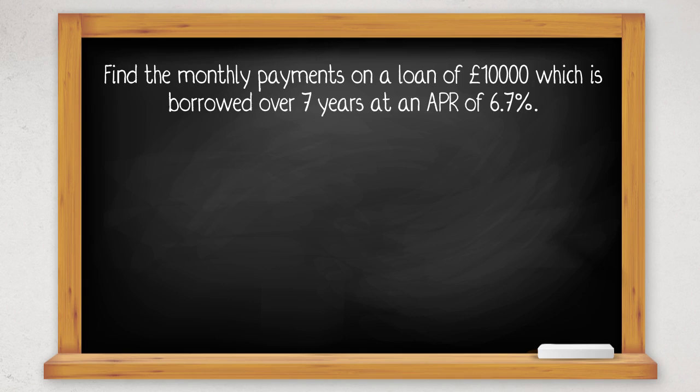Before we can use the formula, we need to find out the number of months, n. This is 7 years times 12 months in a year, which is 84 months.